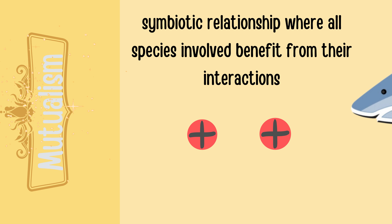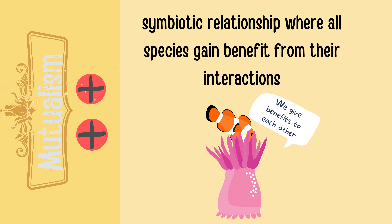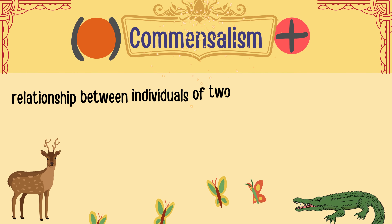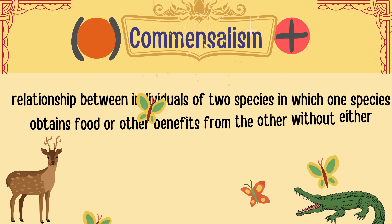This is an example of mutualism: clownfish and sea anemone. They are interacting with each other and giving each other benefits. The anemone provides the clownfish with protection and shelter, while the clownfish provides the anemone nutrients in the form of waste while also scaring away predators.